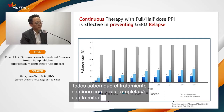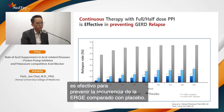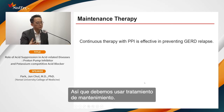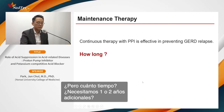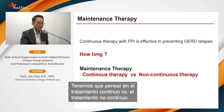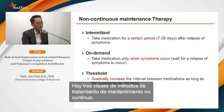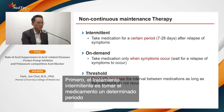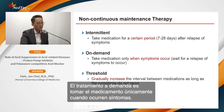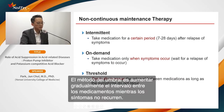Continuous therapy with full or half-dose PPI is effective in preventing relapse compared with placebo. However, we need to consider how long maintenance therapy should continue beyond one or two years. There are three non-continuous maintenance approaches: intermittent therapy — taking medication for a certain period after loss of symptoms; on-demand therapy — taking medication only when symptoms occur; and threshold method — gradually increasing intervals between doses.